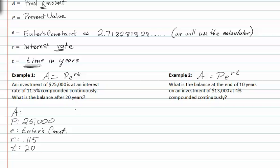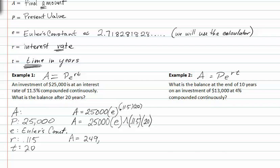So let's plug all that stuff in. A will equal P or twenty-five thousand times E raised to the rate times time or 0.115 times twenty. It's a good idea to put this in parentheses. If you're entering it in your calculator, you'll want to enter it as twenty-five thousand times E carat point one one five times twenty. When we enter this in the calculator, the balance at the end is two hundred forty-nine thousand three hundred fifty-four dollars and fifty-six cents.